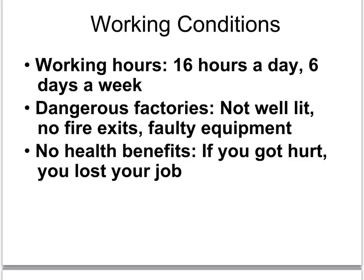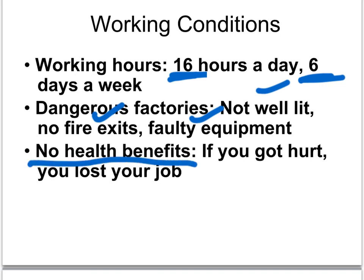Working conditions were not good during the Industrial Revolution. A typical work day would be 14 to 16 hours, six days a week, just to get by. Factories were dangerous — not well lit, no fire exits required by law, and faulty equipment led to lots of injuries and deaths. No health benefits. If you got hurt, you lost your job. If you hurt your arm in a machine, you can't afford a doctor, it gets infected, you might lose your arm, and then because you can only work half as fast, you lose your job.